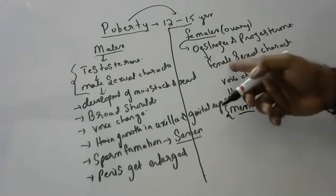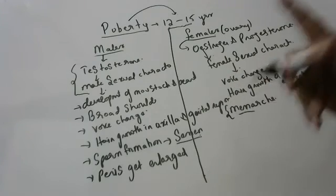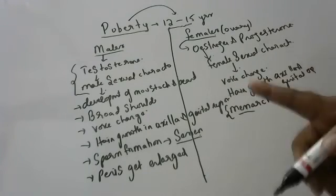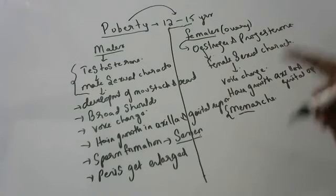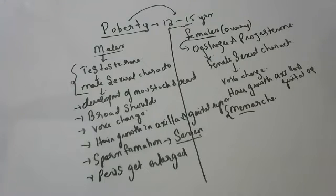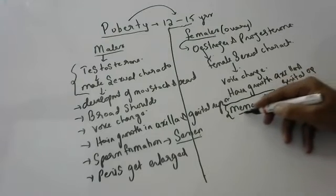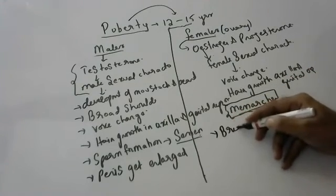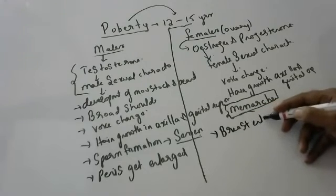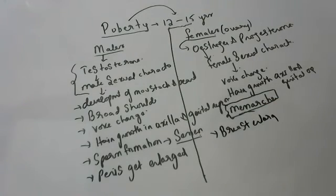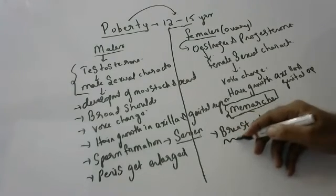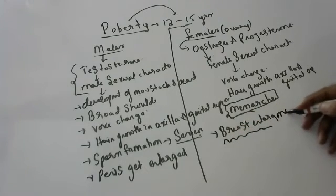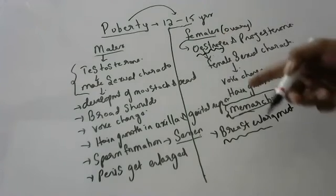Menstrual cycle will start at the age of 12 to 15 years and continues till the age of 40 to 45 years. And also breast enlargement takes place. Hair growth in face, axilla and breast enlargement take place.